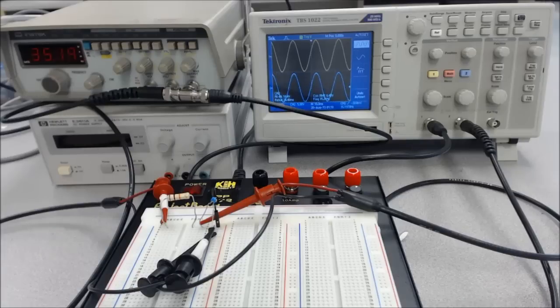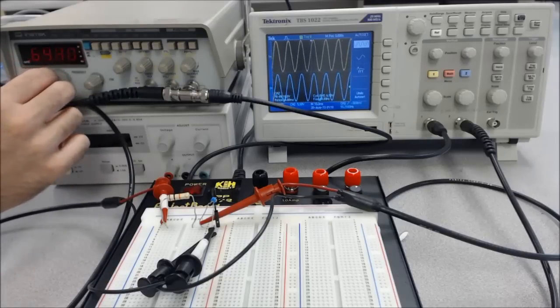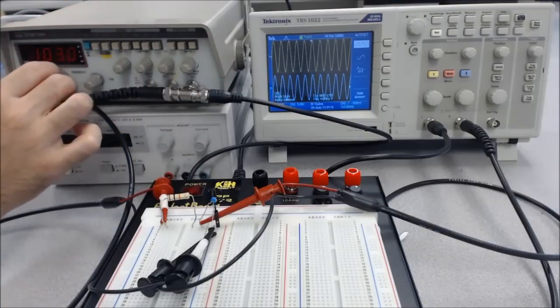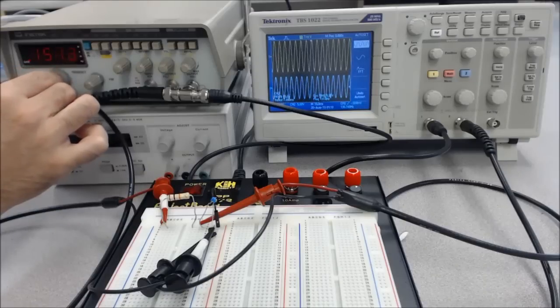This filter has a cutoff frequency of around 150 hertz. What you'll see is as I turn the frequency up on my function generator, for a while the two signals have about the same amplitude. But once I get past my 150 hertz cutoff frequency,